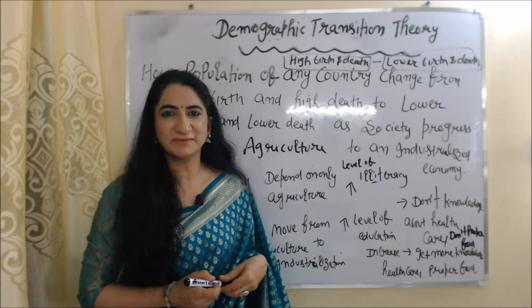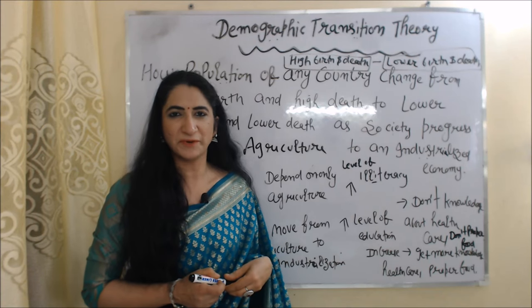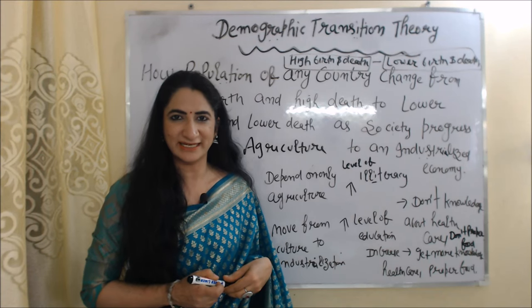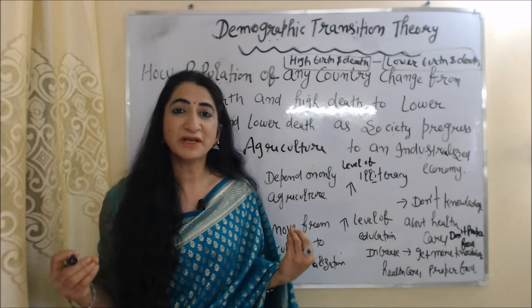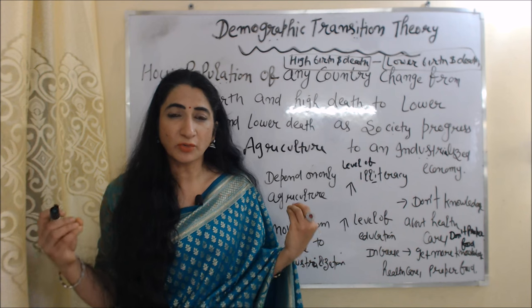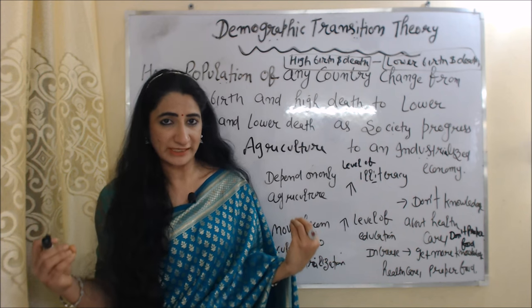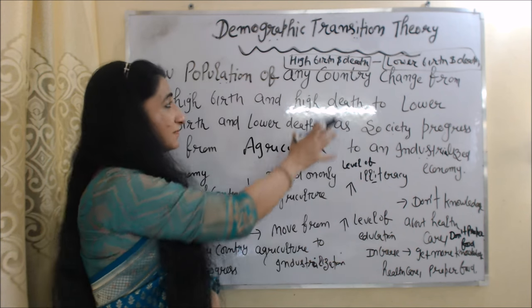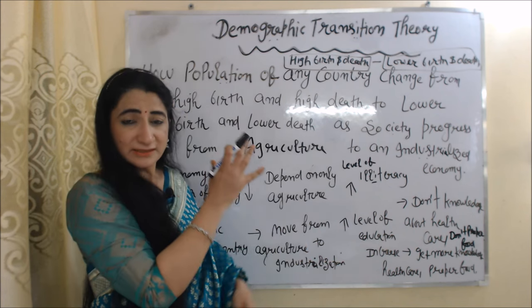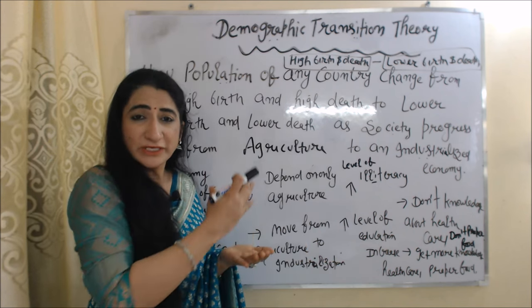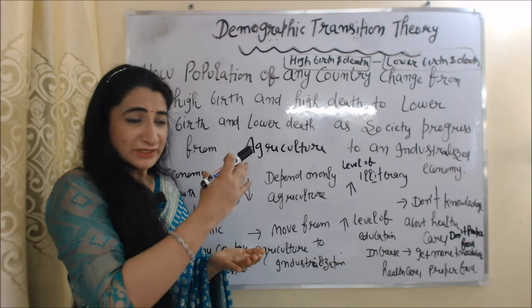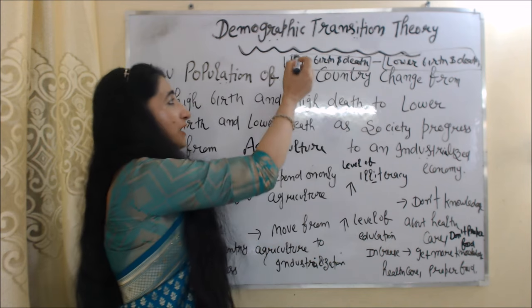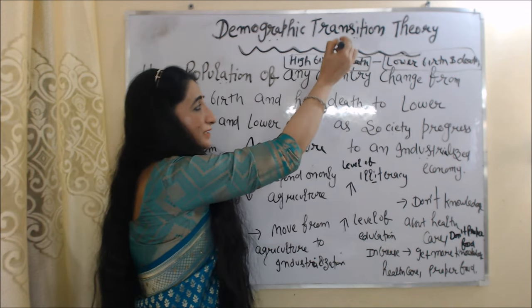Hello everyone, my name is Mini Sethi. I hope you all are staying healthy. Today we are going to talk about demographic transition theory. This theory basically tells us how the population of any country changes from high birth and high death rates to lower birth and lower death rates.